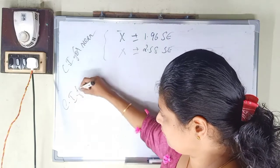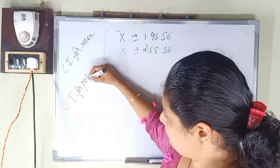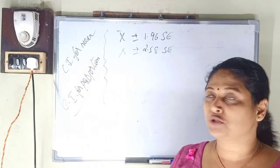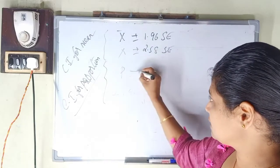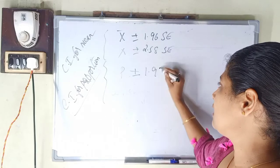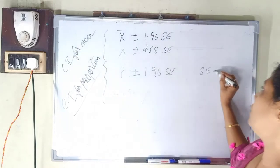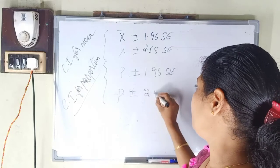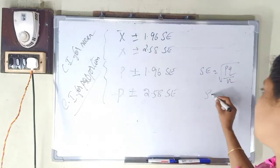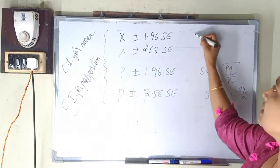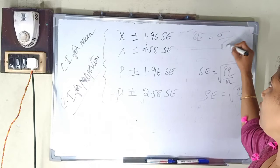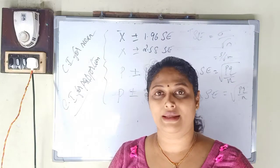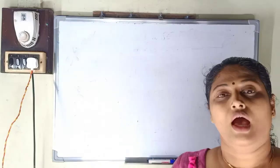The confidence interval for proportion is: P plus or minus 1.96 times SC, where SC is equal to the square root of PQ by N. For 99%, it is P plus or minus 2.58 times SC, where SC equals the square root of PQ by N.